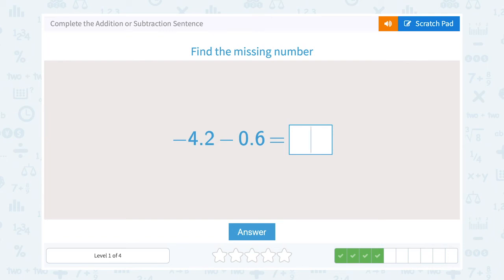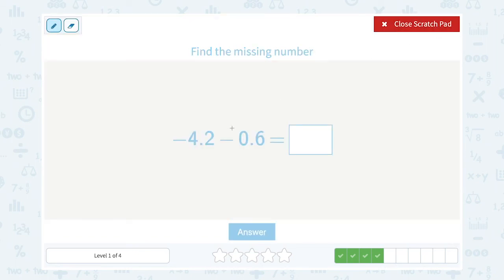Find the missing number. Negative 4.2 minus 0.6. Okay, I can use the same thinking here. Subtracting a positive is the same as adding a negative. When you're subtracting with integers, your rule is you can always add the opposite. So I can add negative 0.6.